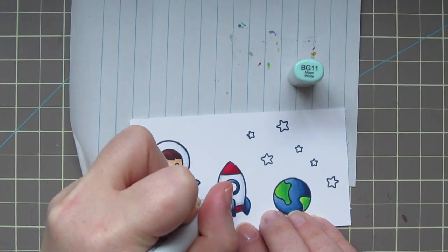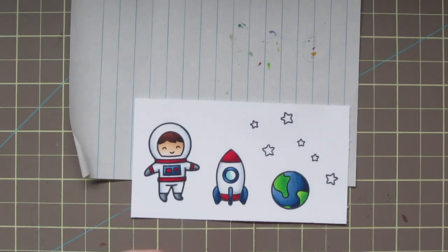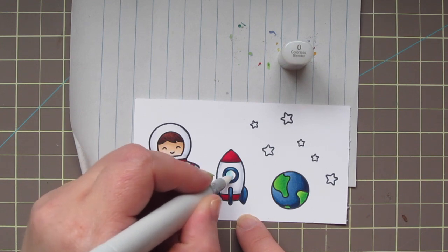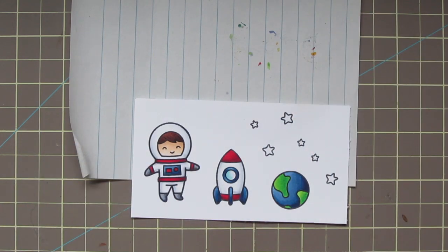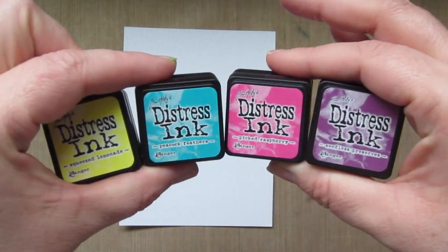I'm taking the BG-11 to add just a little bit of shadow on the glass of the window of the rocket ship, and then I'll blend that out with the colorless blender. And I'm not going to use those stars. I didn't realize when I stamped them out that there were no matching dies for those, so I'm going to go in a different direction for that later.